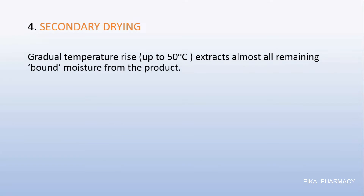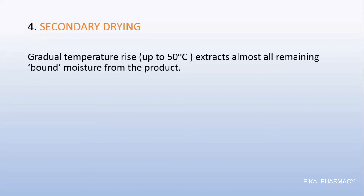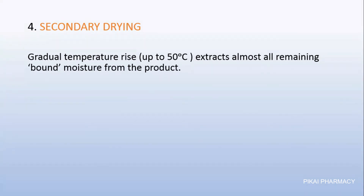The last step is secondary drying. Here we gradually increase the temperature up to 50 degrees Celsius — not more than that — as we are dealing with heat-sensitive products which might get degraded. We increase the temperature up to a certain value where the product does not get destroyed. We do this to extract almost all remaining bound moisture from the product. One hundred percent drying is not possible, but we try to achieve as much as possible. The threshold value is 50 degrees Celsius; increasing above that can damage the heat-sensitive product.